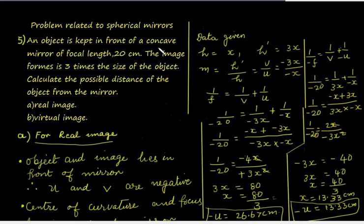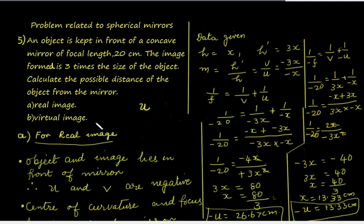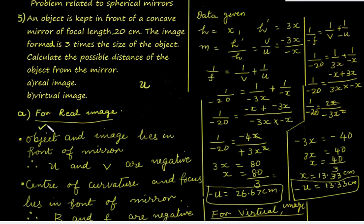An object is kept in front of a concave mirror of focal length 20 centimeters. The image formed is three times the size of the object. Calculate the possible distance of the object from the mirror. f is given, v is not given, you have to calculate u. This you have to do for real image and virtual image. Let us take case (a), that is for real image first.